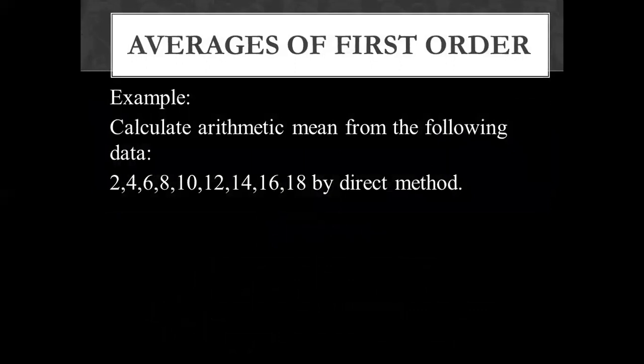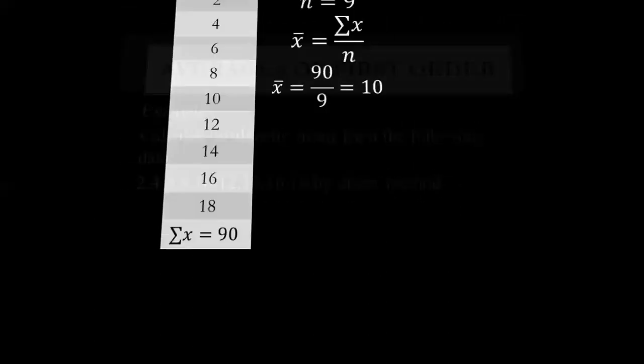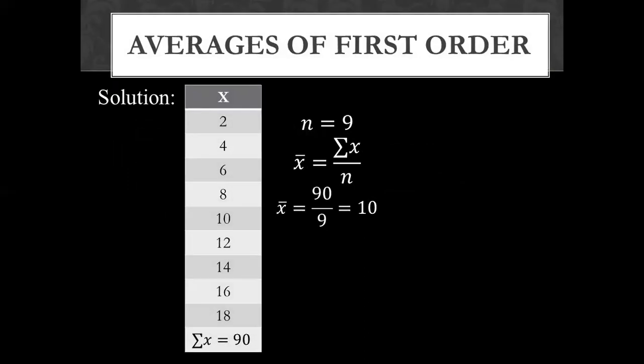To calculate the mean from the following data, we use the direct method. We have written the x values. The total sum of x values is 90. We have added all values.